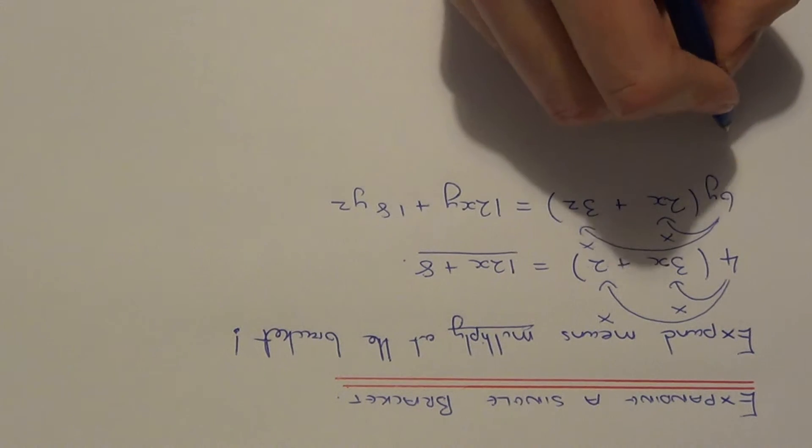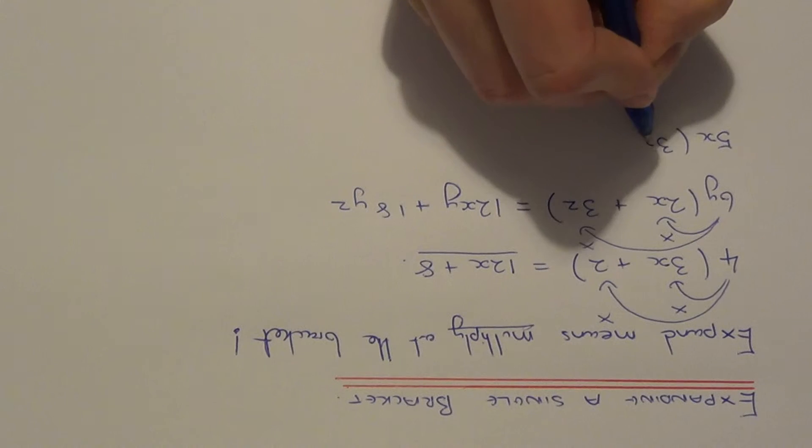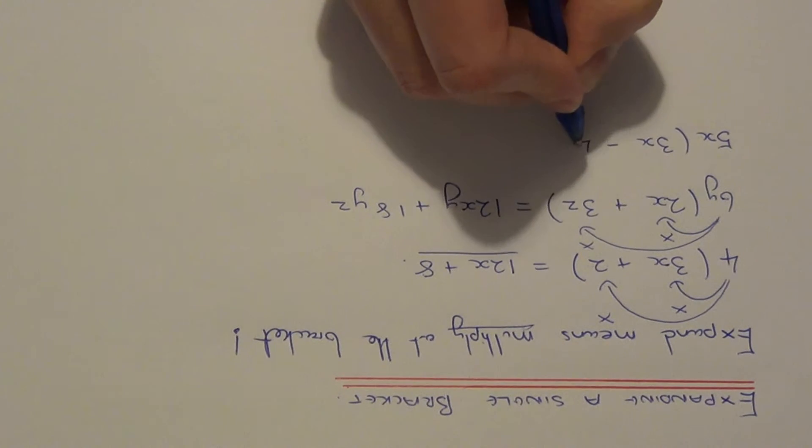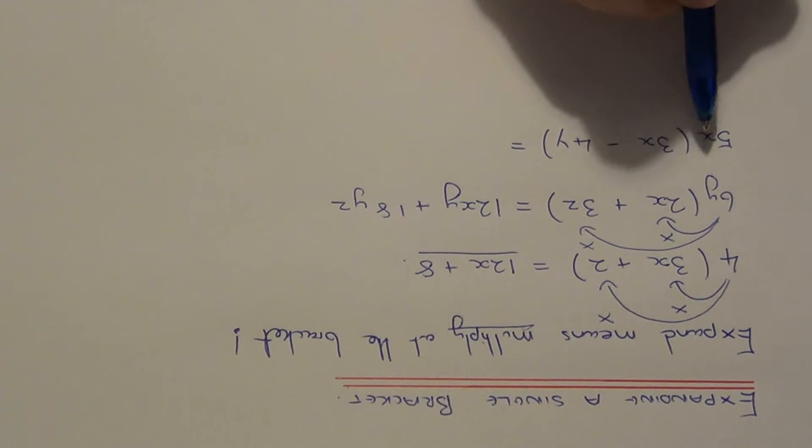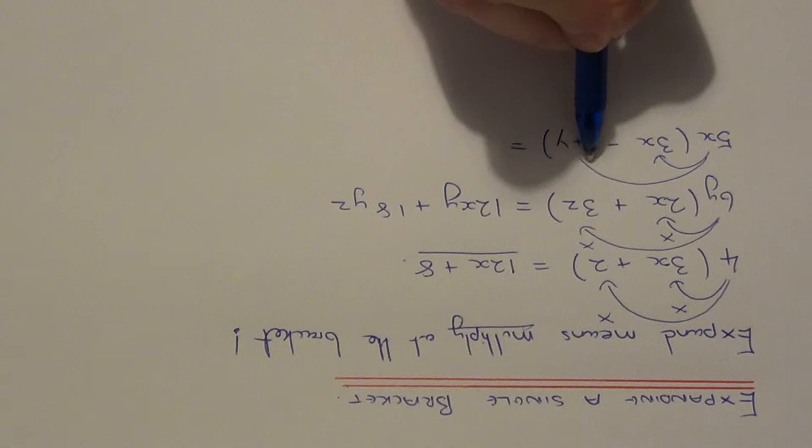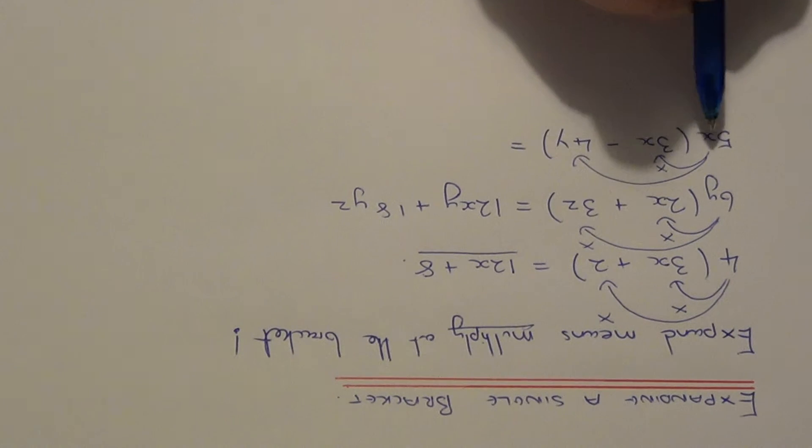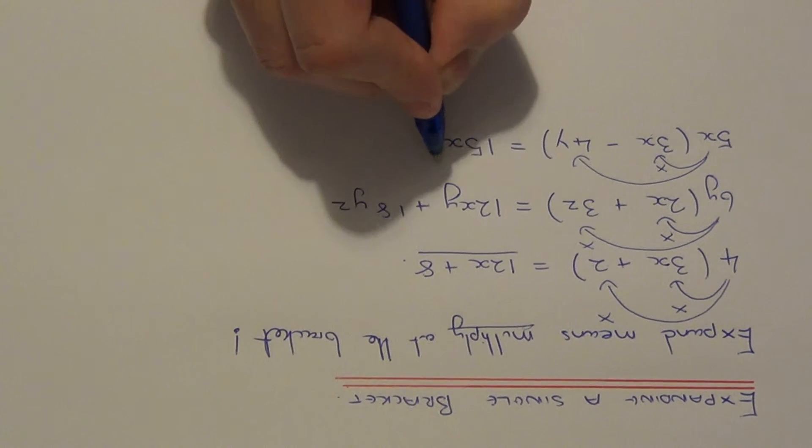So let's do another example. So this time let's expand 5x bracket 3x minus 4y. So again the term at the start of the bracket has to multiply both terms inside the bracket. So again we do 5x times 3x. This will give us 15x squared.